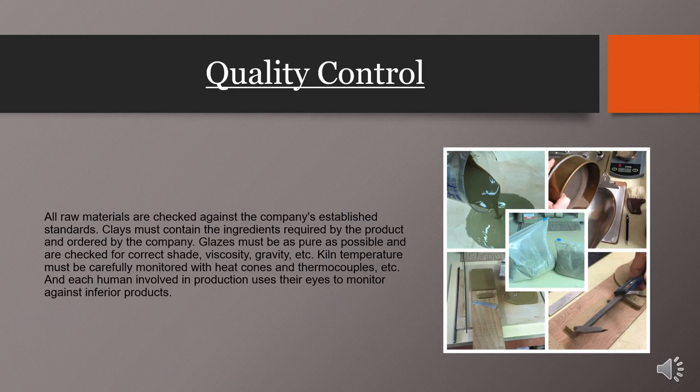Talking about quality control in the industrial process of creating clay ceramics: all materials brought in are checked against company-established standards. Clay must contain the ingredients required by the product. Glazes must be as pure as possible and are checked for correct shade, viscosity, and gravity. Kiln temperature must be carefully monitored with heat cones and thermocouples — devices used to measure temperature in the kiln — and each person involved in production uses their eyes to monitor against inferior products.